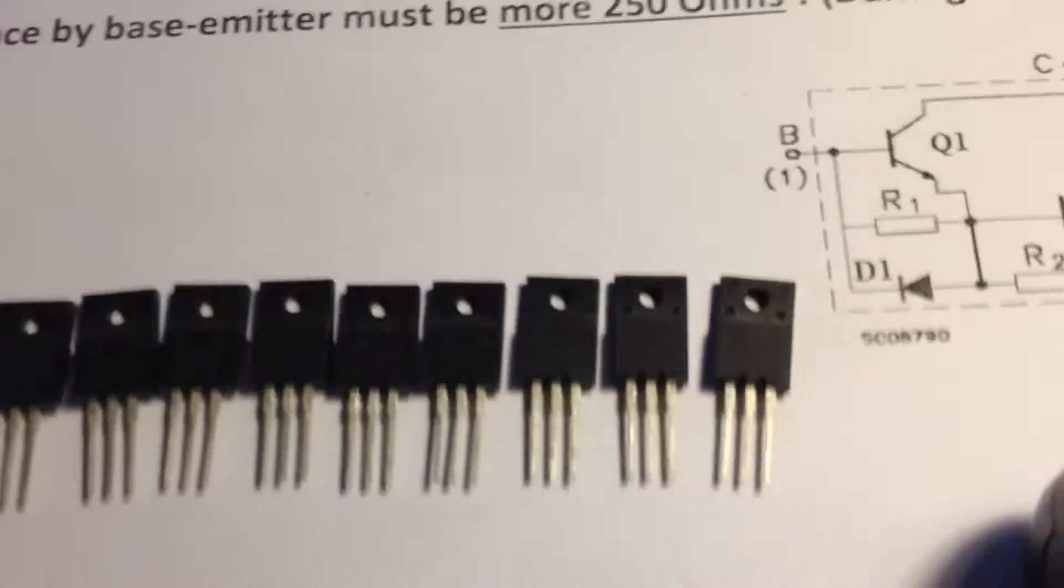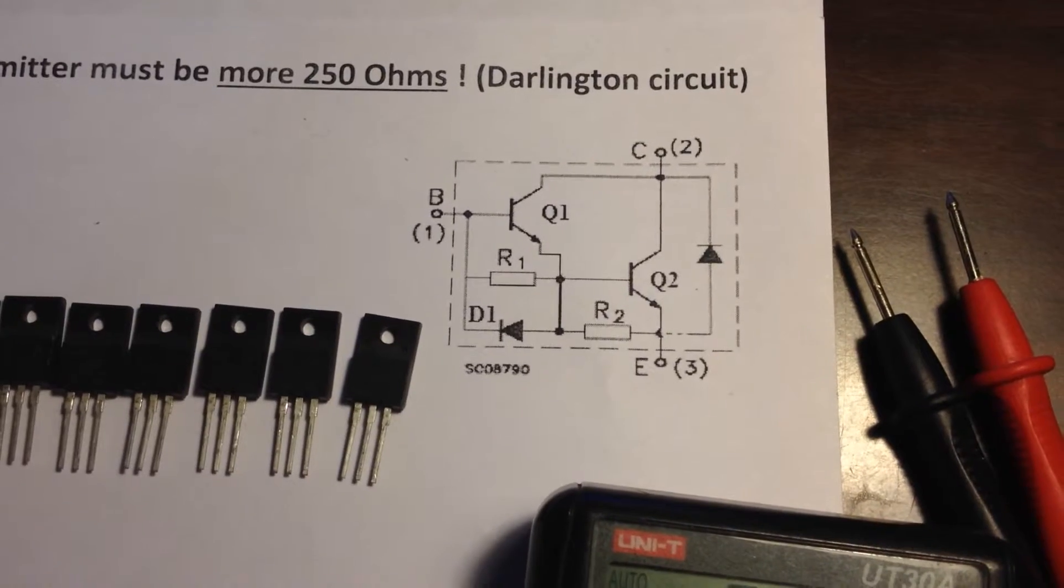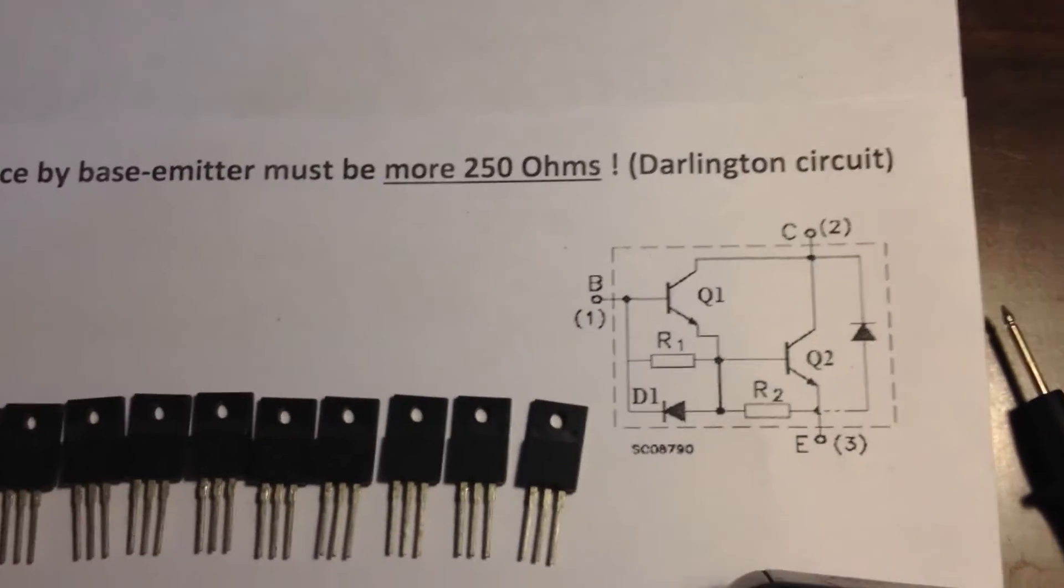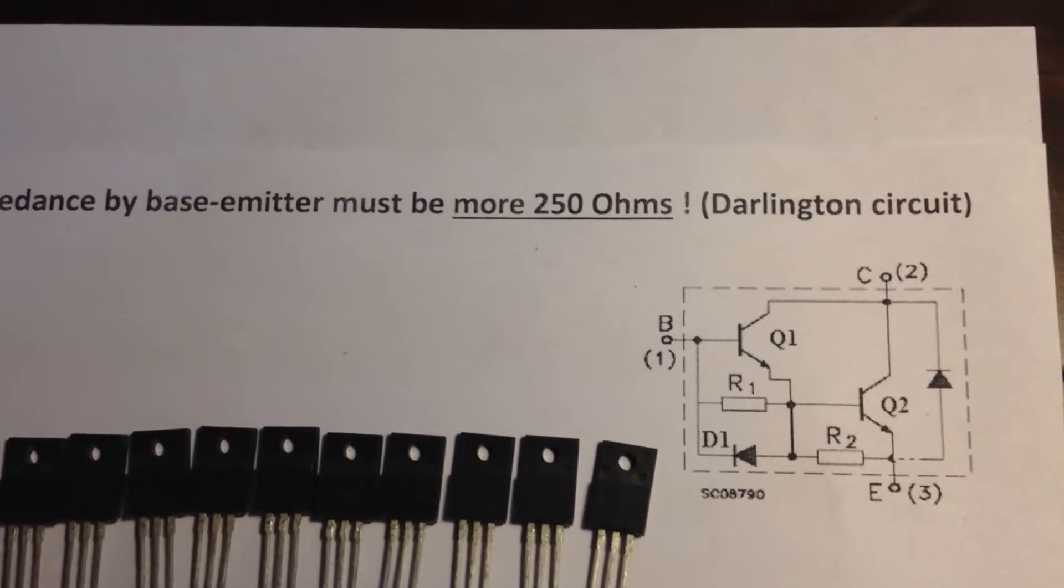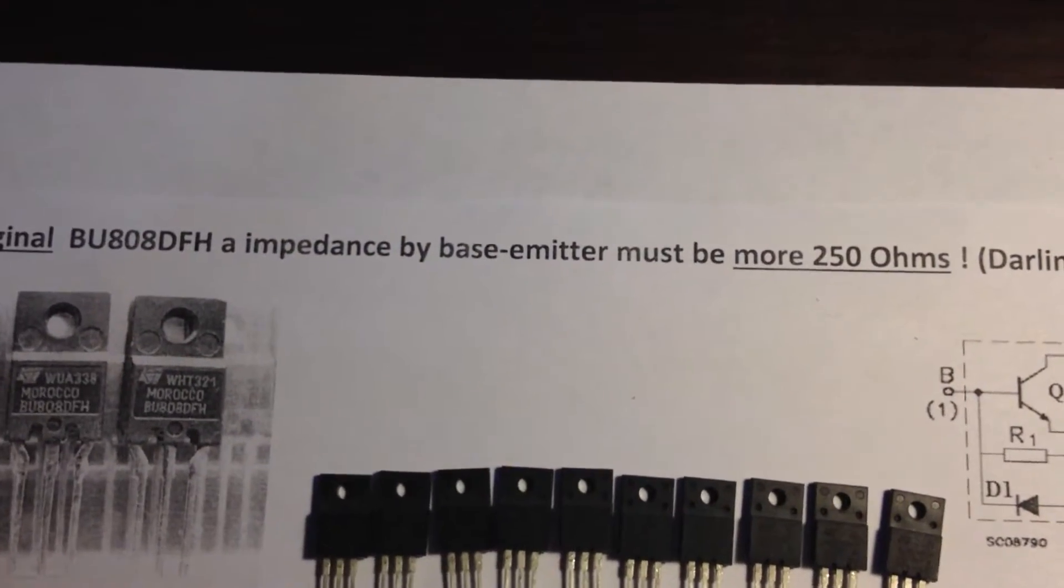In the original, it must behave as an internal Darlington circuit with two transistors and have high impedance on the base-emitter.